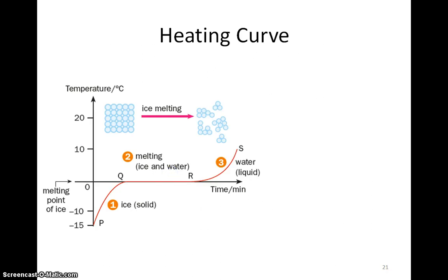This is the graph that we will most likely obtain from the experiment. It is called the heating curve because the substance that we are investigating is being heated during the experiment. Let us now analyze the heating curve.